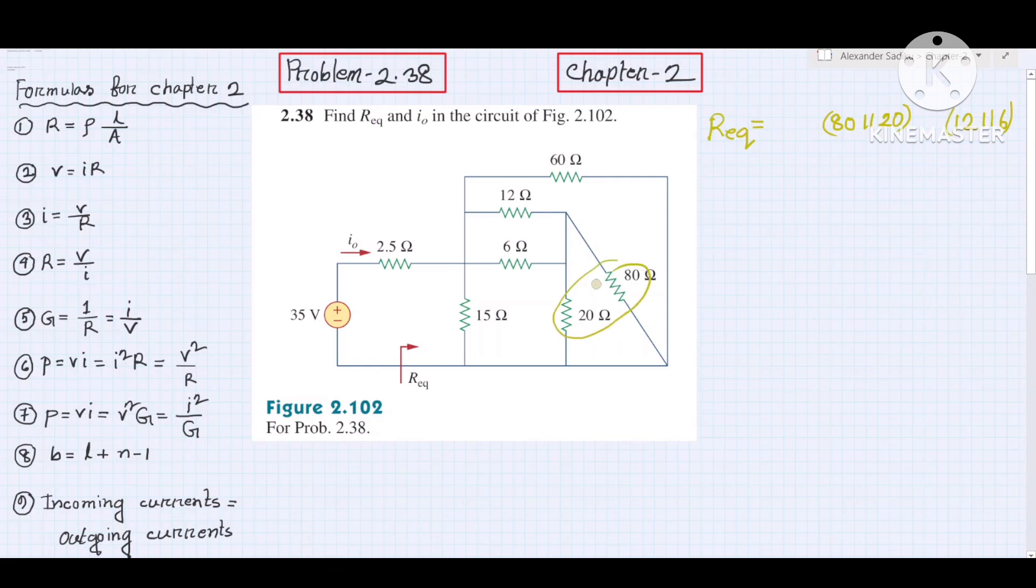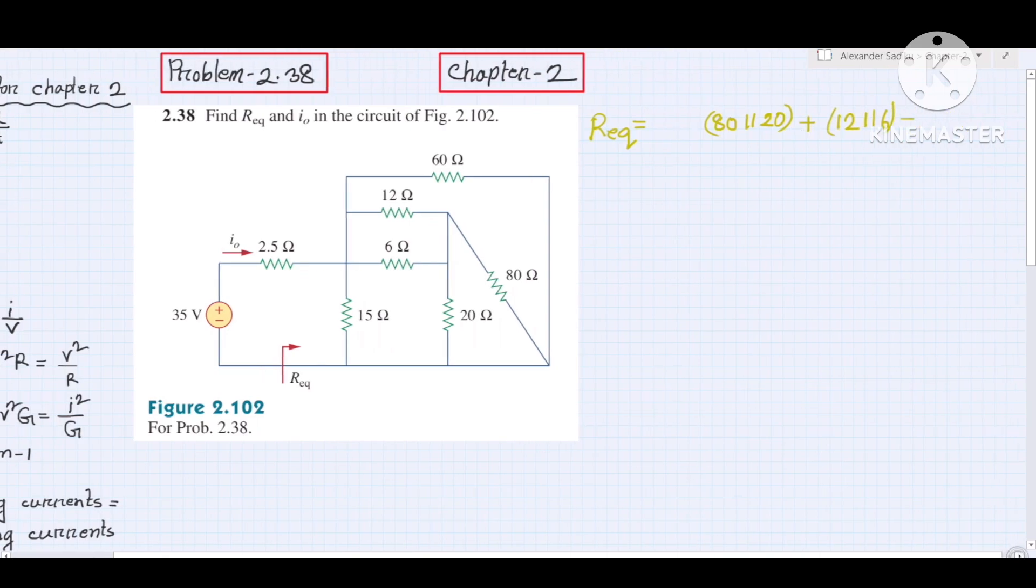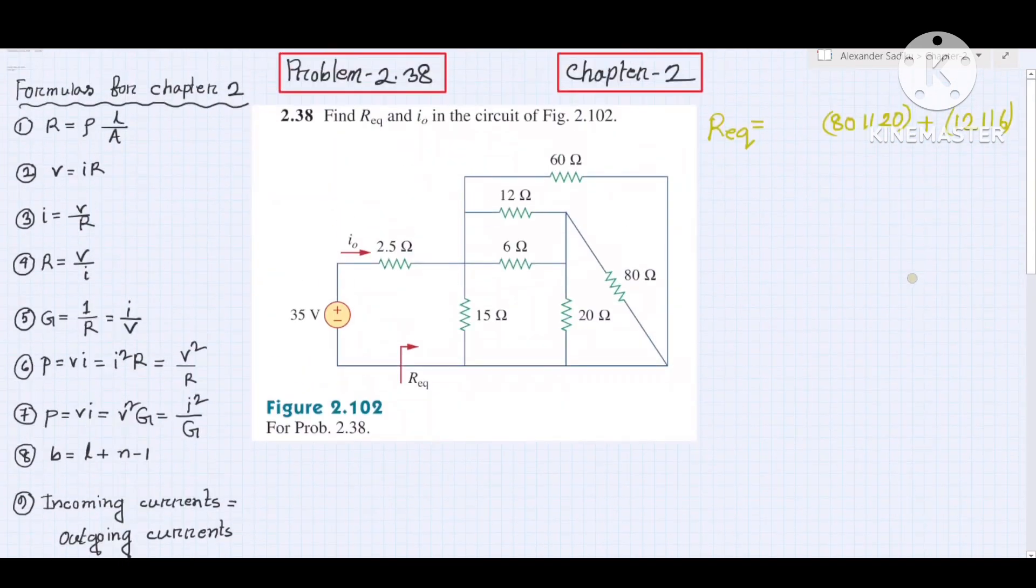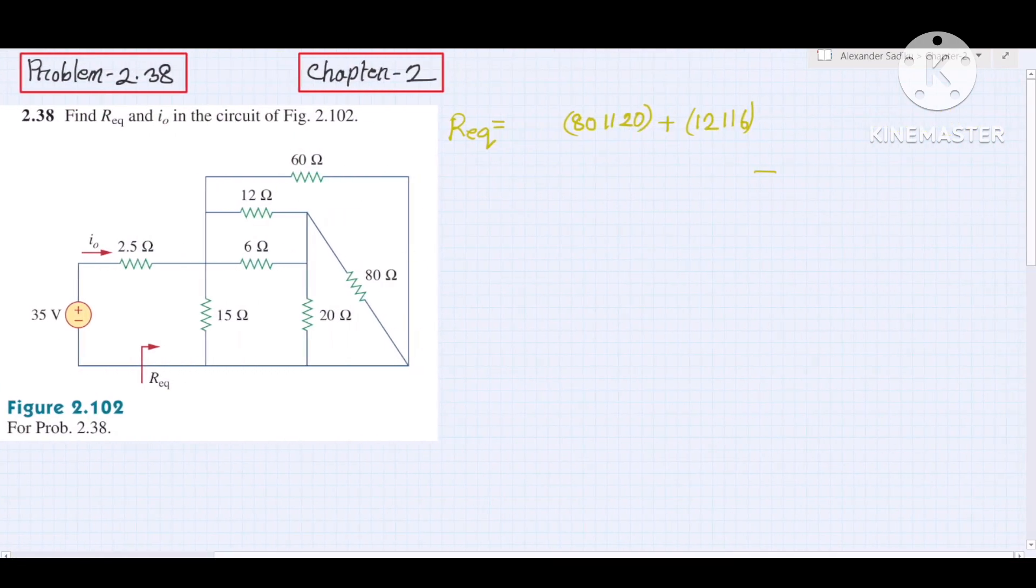Then after the division, 80 ohm and 20 are together, and 12 and 6 are in series. So after the division, we combine 12 and 6 in series.